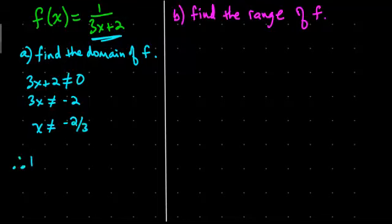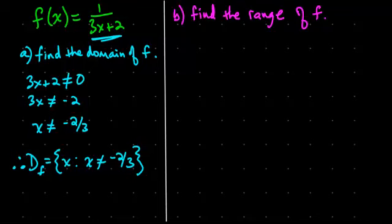Therefore, the domain of f is equal to a set of x's such that, those two little dots, you can read those as such that, so the set of x is such that x is not equal to negative 2 thirds. Okay, so that is, we can plug any number into this function other than negative 2 thirds, because when we plug in negative 2 thirds, we're going to be dividing by 0, which we should know at this point we can't do that.